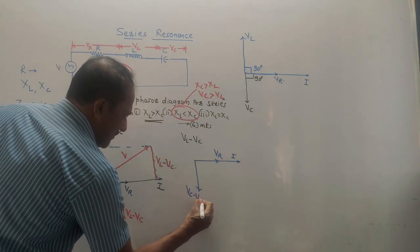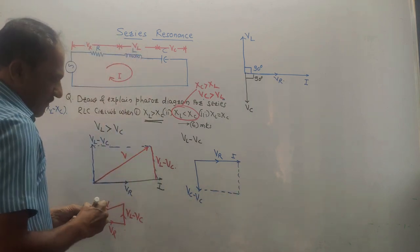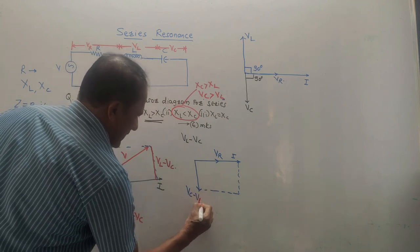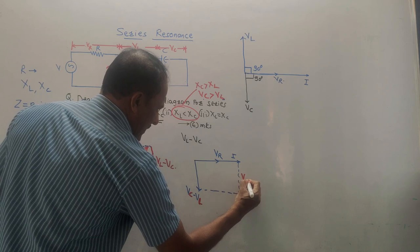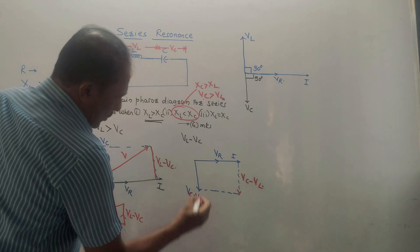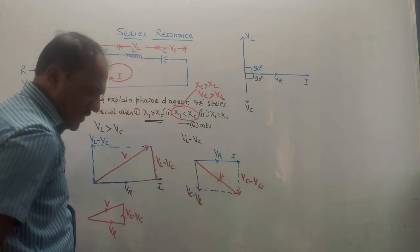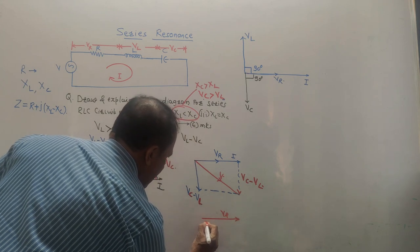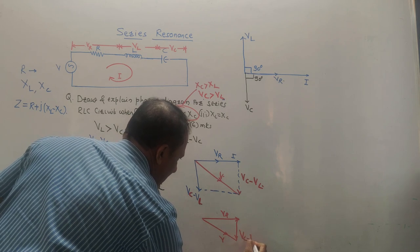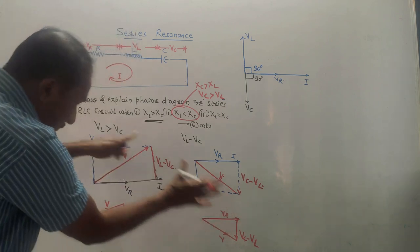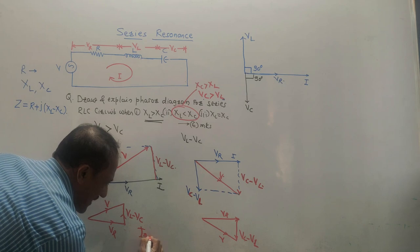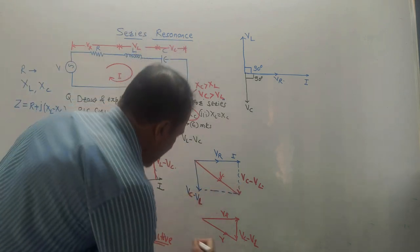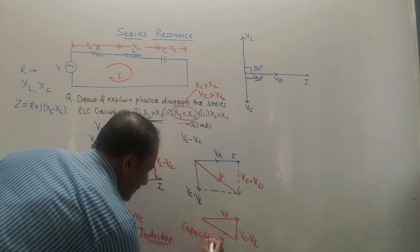Since VC is larger, the resultant VC minus VL is in the downward direction. Completing the rectangle, the resultant voltage V is drawn. The voltage triangle for this condition is: base VR, hypotenuse V, and vertical side VC minus VL. In the first condition VL was larger, so the circuit is said to be inductive. In the second condition VC is larger, so the circuit is said to be capacitive.